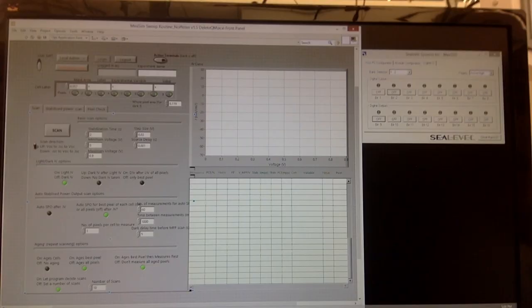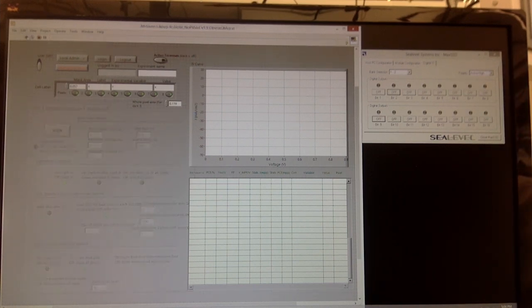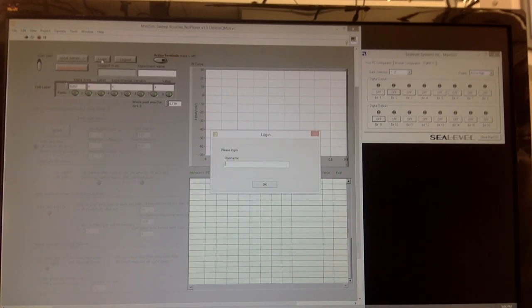After setting up the pixel switcher software, we can begin testing using the LabVIEW program Giles SolarSim Program V17. First, we'll run the program and log in, which will create a folder containing all of our data.